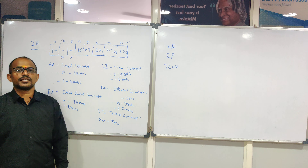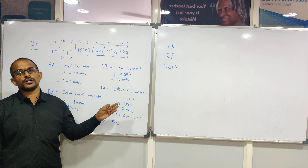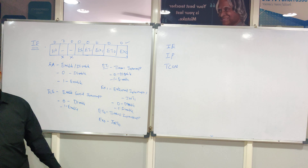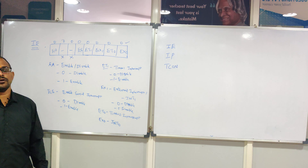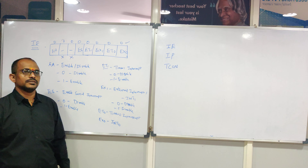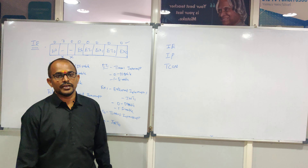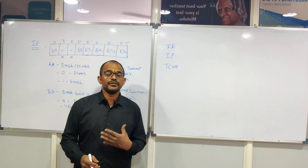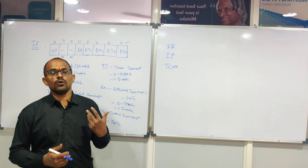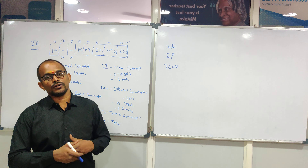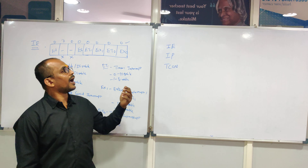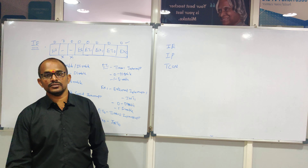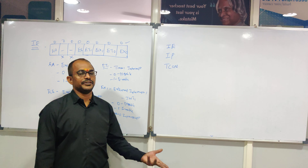Whenever an interrupt is given to the microcontroller, it stops the main program and executes the ISR, which is the high-priority task. But if all 5 interrupts are generated at the same time, the microcontroller needs a priority order. This priority order is managed by the IP register — the Interrupt Priority register — which helps change the priorities of interrupts from their default order.